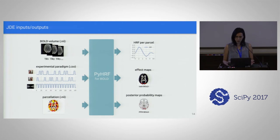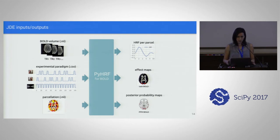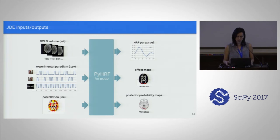From a package point of view, we have pyHRF. The inputs are the BOLD volume, the experimental paradigm — the events of our tasks or stimuli — and the parcellation. As outputs, we get one hemodynamic response function per parcel, effect maps — brain effect maps, one per experimental condition — and also posterior probability maps per experimental condition.